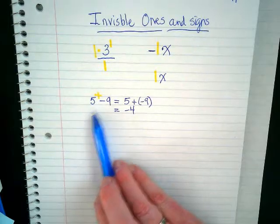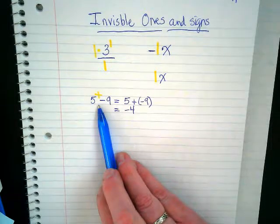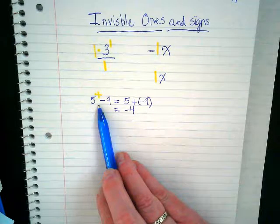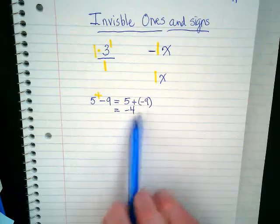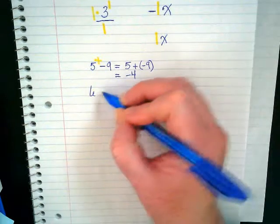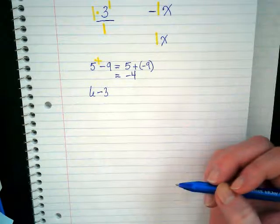So when you guys see subtraction like this, you've been seeing this since you were in elementary school, but nobody told you it's really just addition with a negative. In this case we're ending with a negative answer, but you guys have seen problems like this ever since you learned how to subtract. What is six minus three? Three.